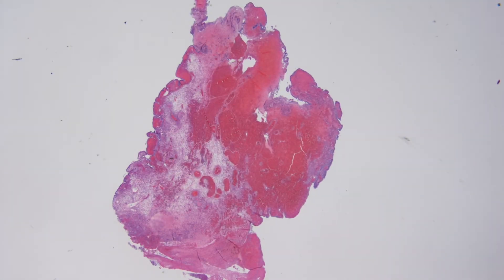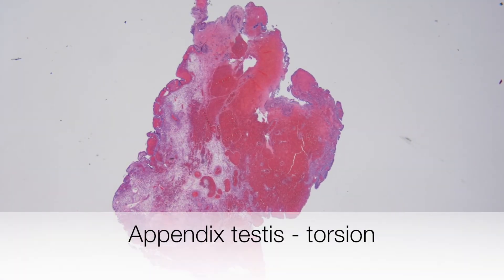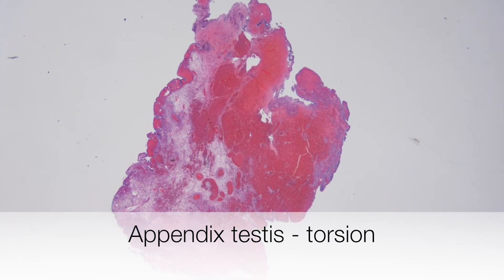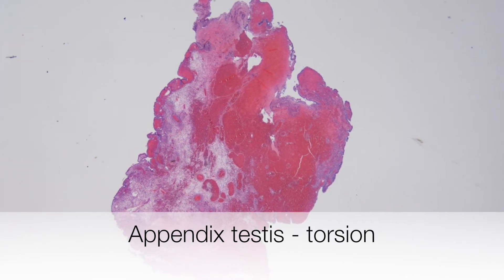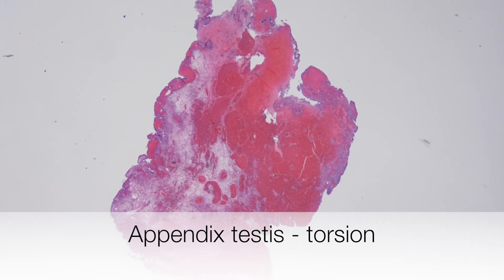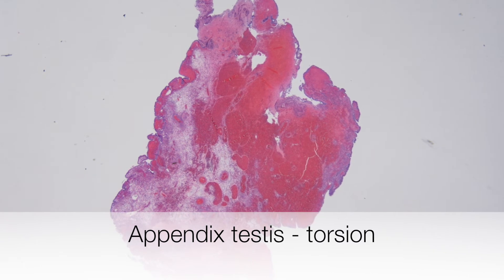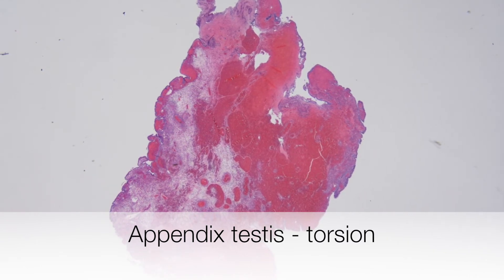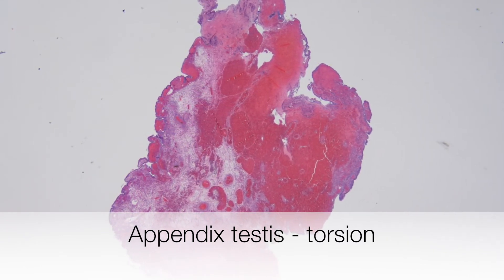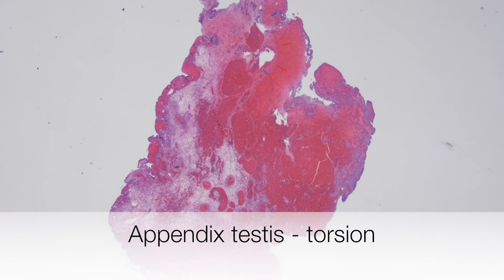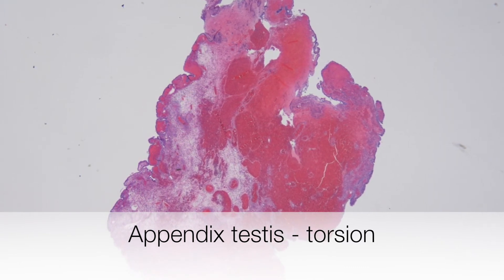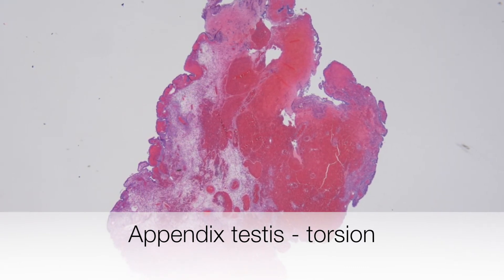This is a low-power view of a torted appendix testis. If the stalk of the appendix testis is narrow, it will be susceptible to being twisted, resulting in haemorrhagic infarction.